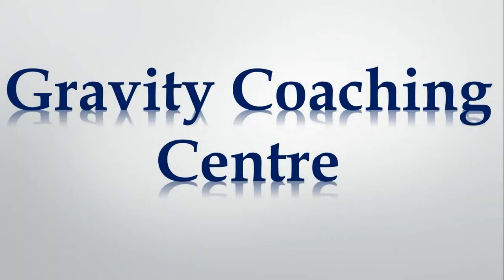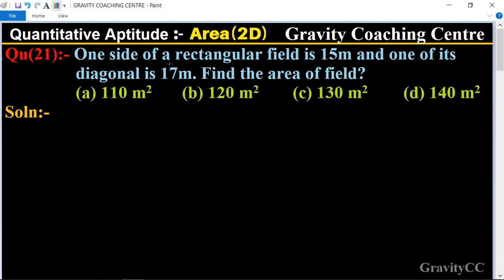Welcome to our channel Gravity Coaching Center. Quantitative Aptitude, chapter Area, question number 21. One side of a rectangular field is 15 meters and one of its diagonals is 17 meters. Find the area of the field.